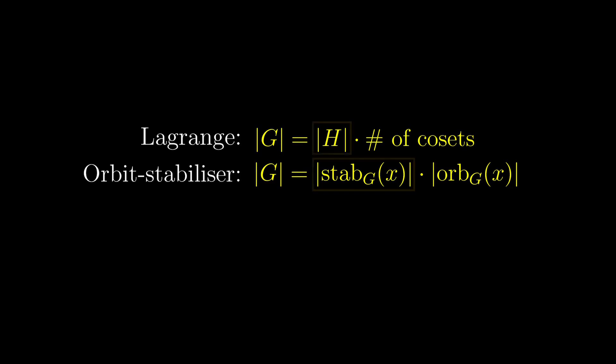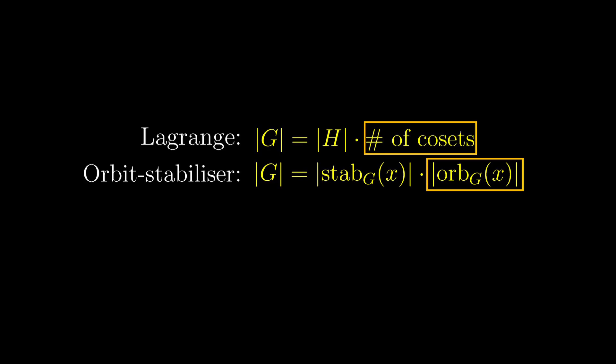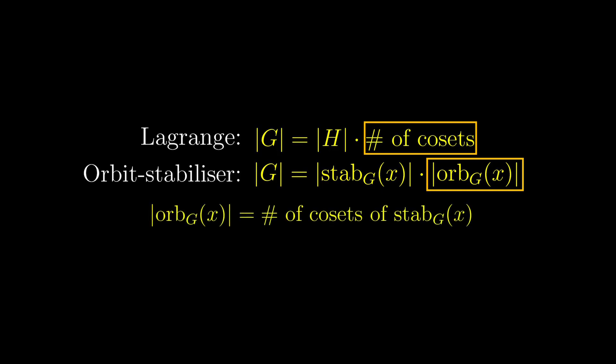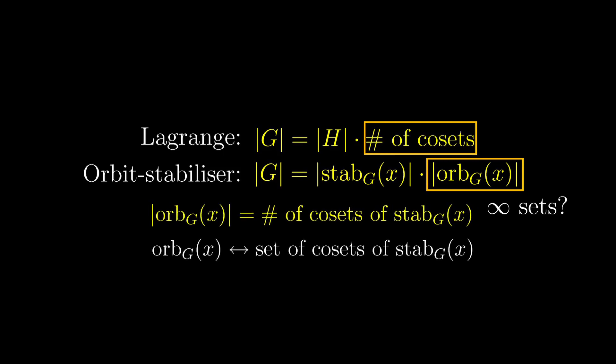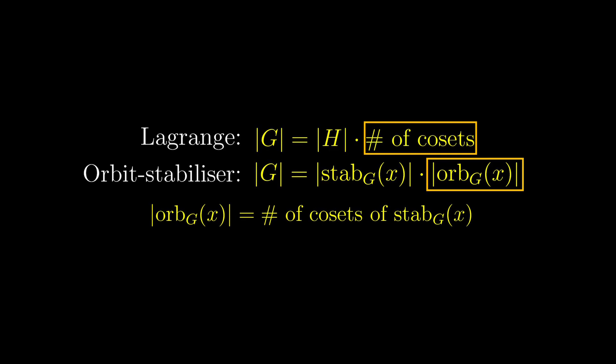Now notice that the stabiliser is a subgroup of G. So what the orbit stabiliser theorem is saying is that the number of cosets of the stabiliser is equal to the size of the orbit. In a normal lecture or book, they will prove this statement, then we can prove orbit stabiliser from Lagrange. In the last video, we were left with the question of what happens when the group G is actually infinite, like the group of symmetries of the real number line. Instead of saying the previous statement, we would say that the orbit of X bijects with the set of cosets of the stabiliser of X. This concept will generalise well for infinite sets, and is actually the statement of the full orbit stabiliser theorem. But don't worry if you don't know anything about bijection or infinite sets, because it is not very important in developing intuitions for group theory.